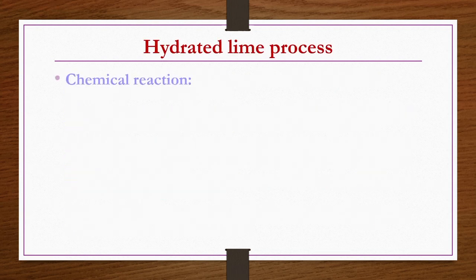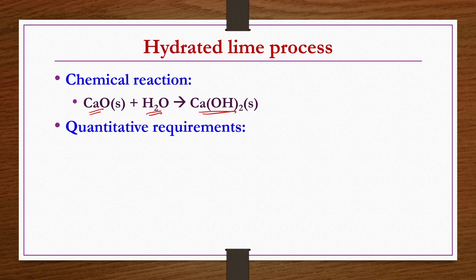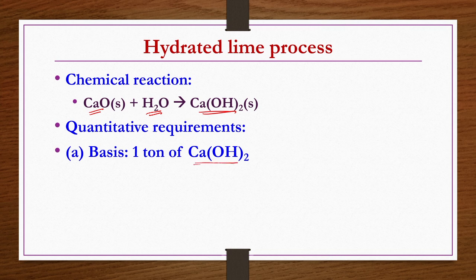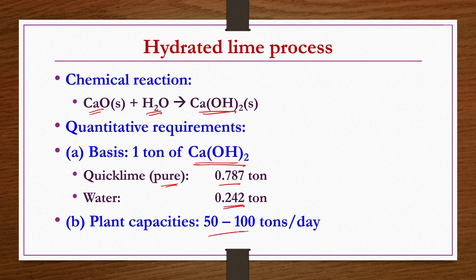Hydrated lime process: the chemical reaction is that calcium oxide, the quick lime obtained, when hydrated gives calcium hydroxide or hydrated lime. Quantitative requirements: to get 1 ton of calcium hydroxide or hydrated lime, 0.787 tons of pure quick lime and 0.242 tons of water are required. Plant capacity is between 100 and 500 tons per day in general.